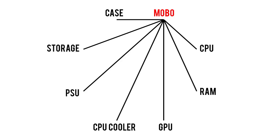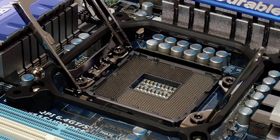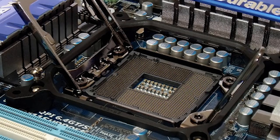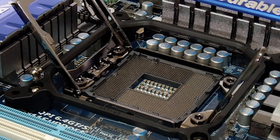Now let's move on to the motherboard. Since this component functions as kind of a central hub, it's no surprise that it requires compatibility with every other part on our list. We already discussed its association with cases, so no need to revisit that. When it comes to the motherboard and CPU, the most important factor for compatibility is the socket type.